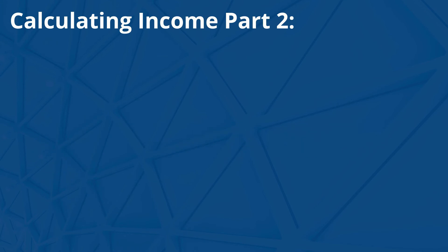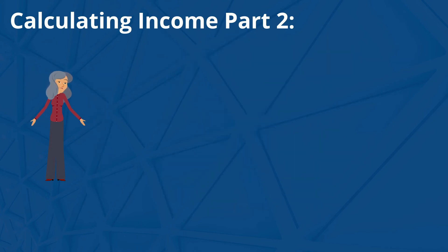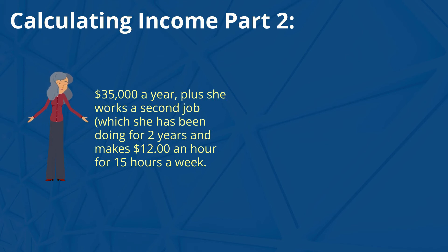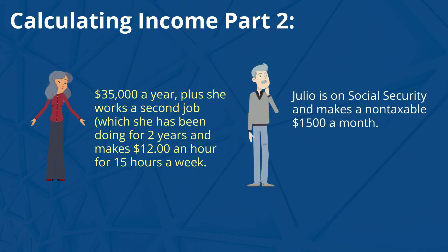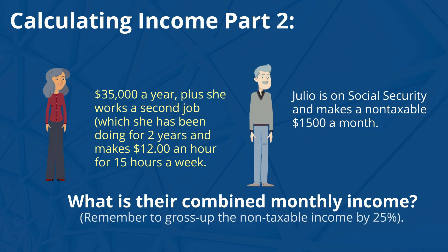Let's look at one last example. Savannah and Julio are looking to refinance their home. Savannah makes $35,000 a year, plus she works a second job, which she has been doing for two years, and makes $12 an hour for 15 hours a week. Julio is on Social Security and makes a non-taxable $1,500 a month. What is their combined monthly income? Remember to gross up the non-taxable income by 25%.